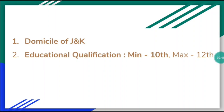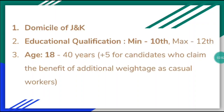The educational qualification defined in SRO 99 of 2008 is a minimum of 10th class and maximum 12th class — if you have done 10th class, you can apply. The age limit criteria is a minimum of 18 years and a maximum of 40 years. Candidates who claim benefits as casual workers will get an additional 5 years of age relaxation, which I will explain further.